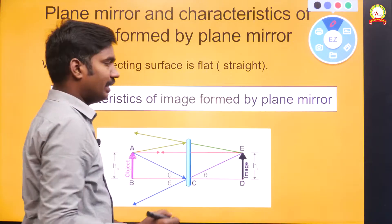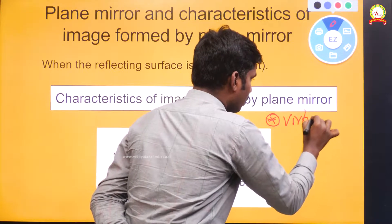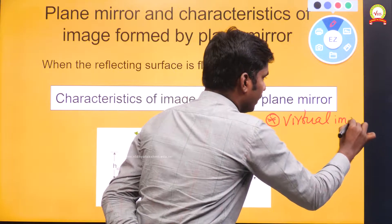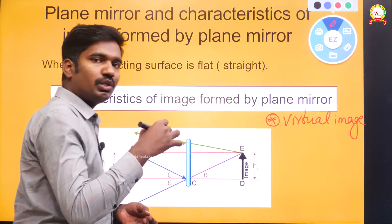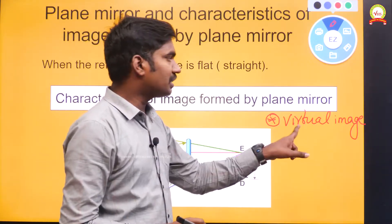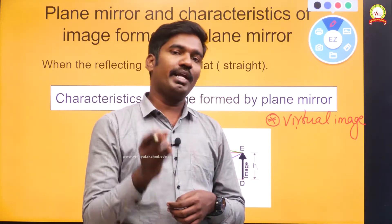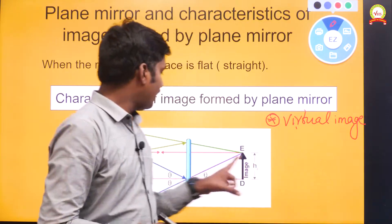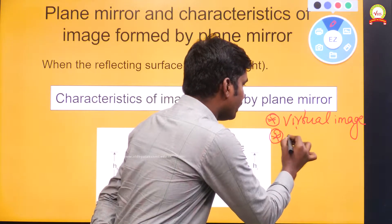The first characteristic is that the image formed by the plane mirror will be virtual. What is the meaning of the word virtual image? Normally we get two types of images: one is a real image and another is a virtual image. Whenever the image is formed when two reflected rays appear to meet, those kinds of images are called virtual images. Where the two reflected rays are actually meeting, those are called real images. The plane mirror will always form only a virtual image.